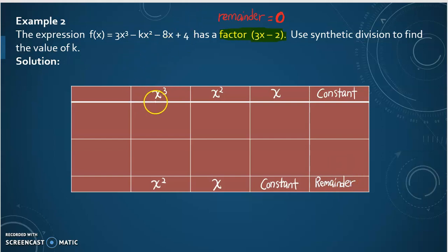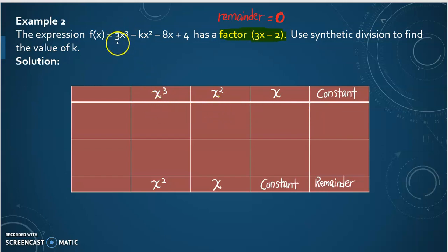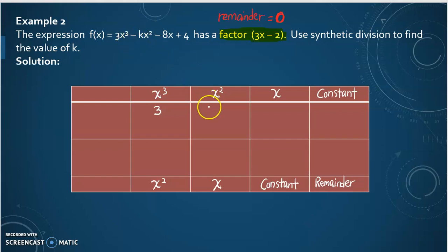We will substitute the coefficients of those values here. For x³, the coefficient is positive 3, so we substitute 3. For x², the coefficient is negative k, so we have to take into account the negative — here is negative k. For x, the coefficient is negative 1. And for the constant, it is 4.